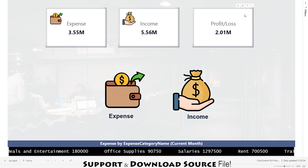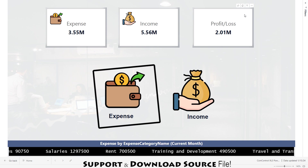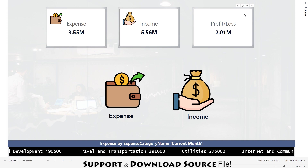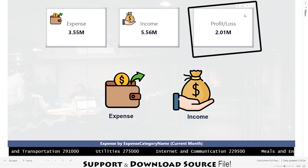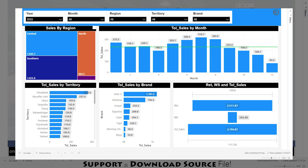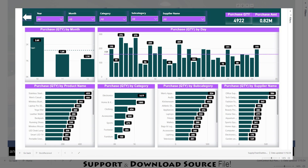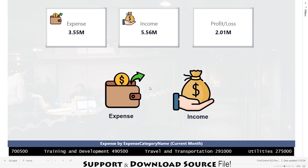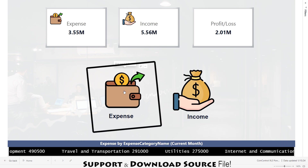If you take a look at the dashboard, it's neatly divided into two sections: expenses and incomes. At the top we have a huge 2.1 million in profit — impressive, right? And don't forget, if you are hungry for more Power BI content, check out our dedicated playlist.